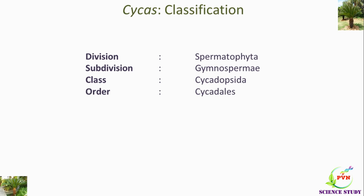Order is Cycadales because the tree trunks are covered by scaly leaves and persistent leaf bases with a crown of compound leaves at the top. The family of Cycas is Cycadaceae because the plants are palm-like in habit with fern-like leaves. Ovules with pollen chamber, and genus is Cycas because female cones are absent. So this is all about the classification of Cycas.